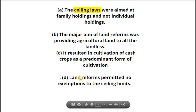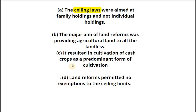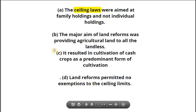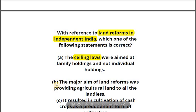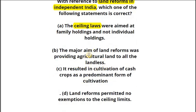Option D says land reforms permitted no exemptions to the ceiling limits — this is absurd and illogical. There have to be some exemptions whenever any legal framework is provided. So C and D are clearly incorrect. The confusion is between A and B. B was under discussion because of the word 'all,' making it seem like an extreme statement. But since A is not correct, B must be the answer: the major aim of land reforms was providing agricultural land to all the landless.